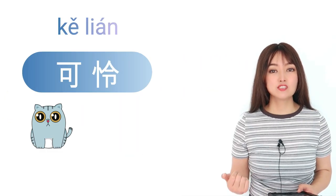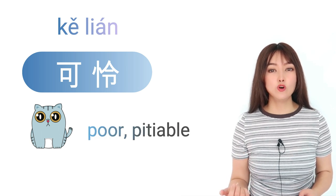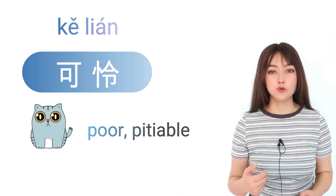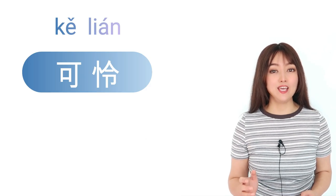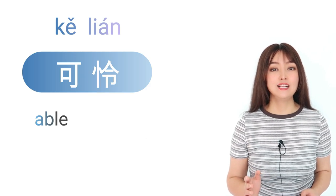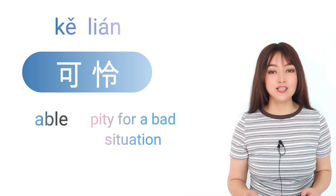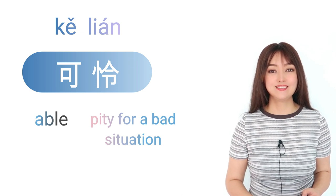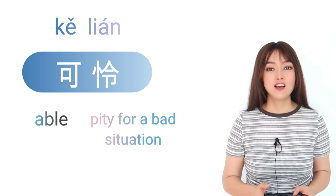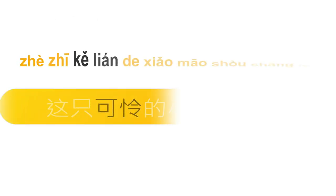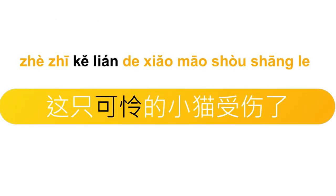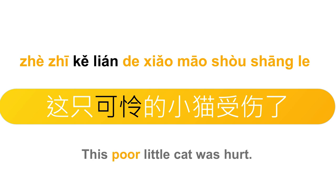下一个，可怜，poor, pitiable。可的意思是 able，怜的意思是 pity for a better situation。可怜，可怜。这只可怜的小猫受伤了。This poor little cat was hurt.